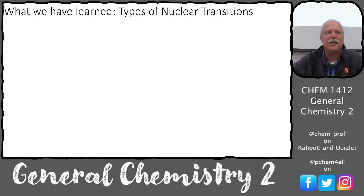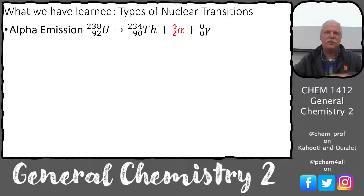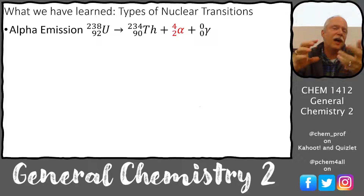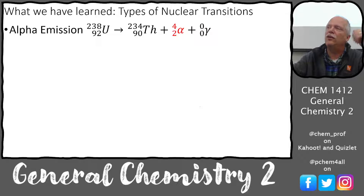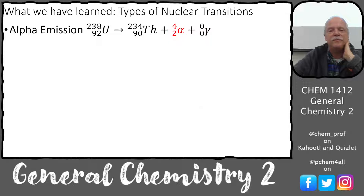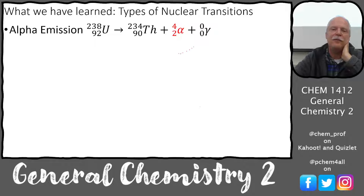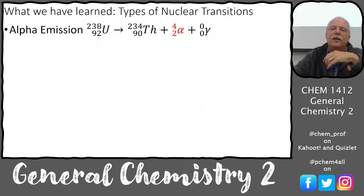Now let's look at nuclear transformations — the actual nucleus breaking apart. One type is alpha emission. The labels alpha, beta, and gamma came from the early days when scientists didn't know what these 'rays' were from radioactive elements, so they named them after the first three Greek letters. Later they realized these were particles coming out of the nucleus.